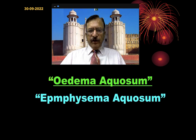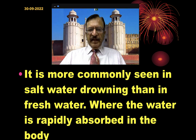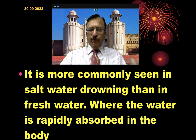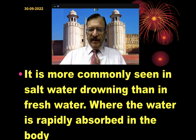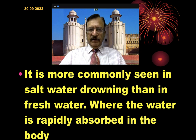Edema aquosum, or emphysema aquosum, are the same terms used for hyper-expanded lungs which cover the mediastinum and the ribs in cases of drowning. This finding is most commonly seen in salt water drowning than in fresh water drowning, where the water is rapidly absorbed into the body. In fresh water, the water is rapidly absorbed, which is why this change is less seen in fresh water drowning.